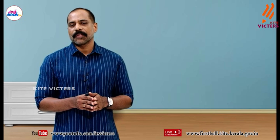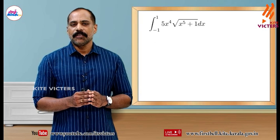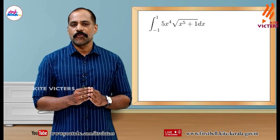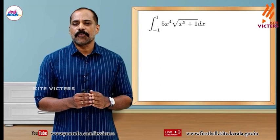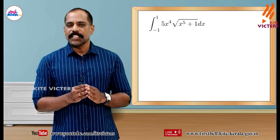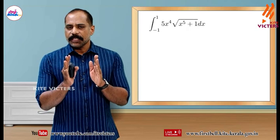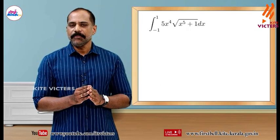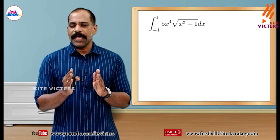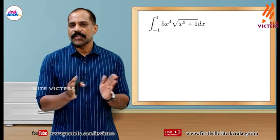Let's talk about the integral from minus 1 to 1 of 5x⁴ into root of x⁵ plus 1 dx. The lower limit is minus 1 and the upper limit is 1. If we take root of x⁵ plus 1, the derivative is 5x⁴.